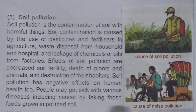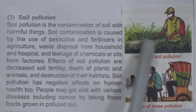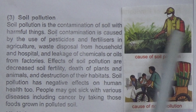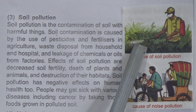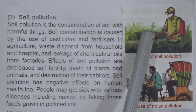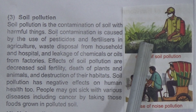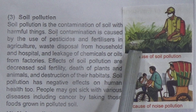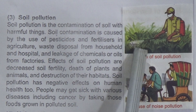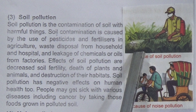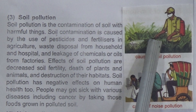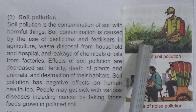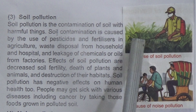People may get sick with various diseases including cancer by eating food grown in polluted soil. Dear students, look at this picture — people are using insecticide and pesticide on crops. If we use large amounts of insecticides, pesticides, and chemical fertilizers, the soil becomes polluted. Harmful chemicals from the polluted soil enter the plants and crops, and when we eat them, they may cause various diseases like cancer.